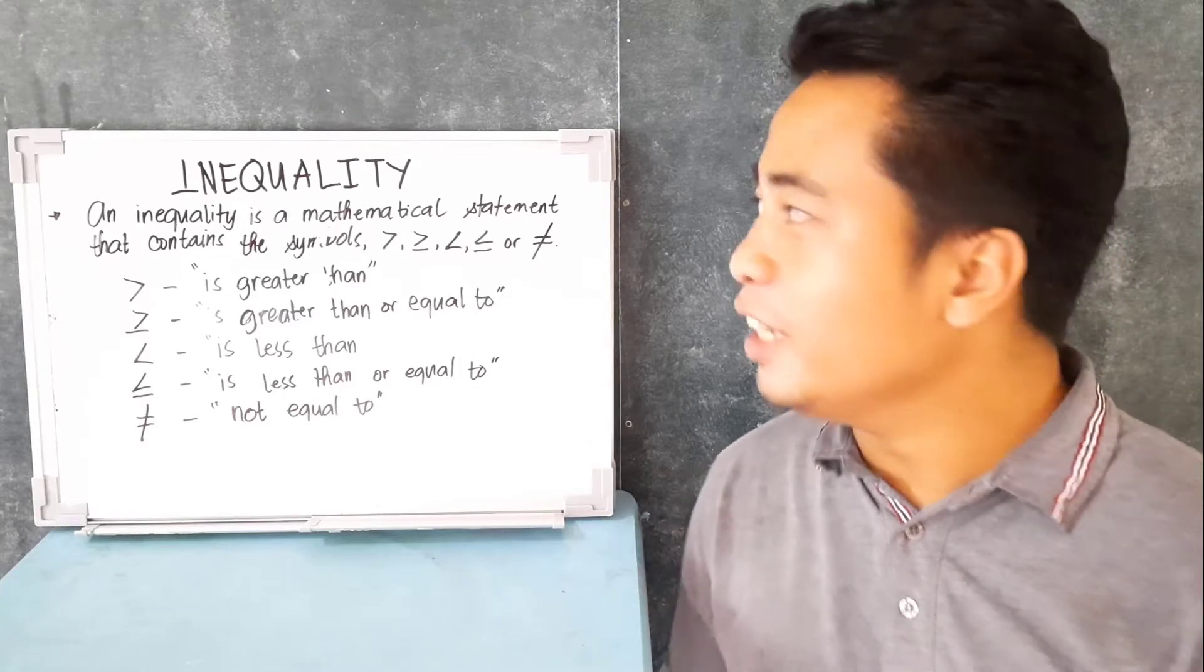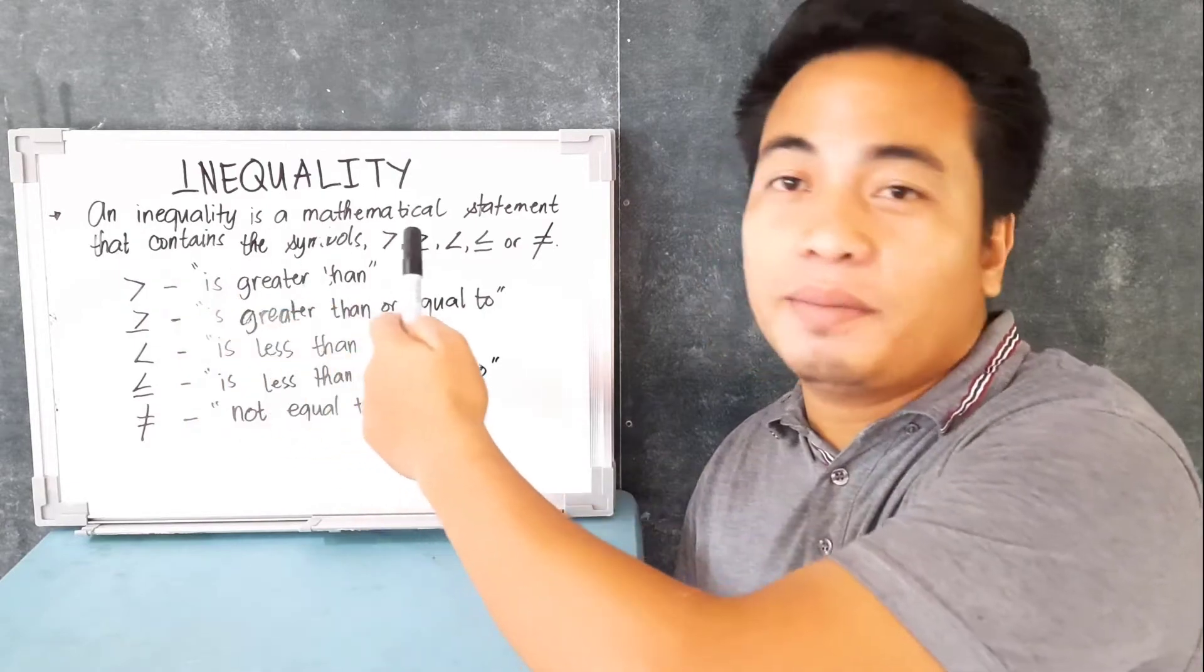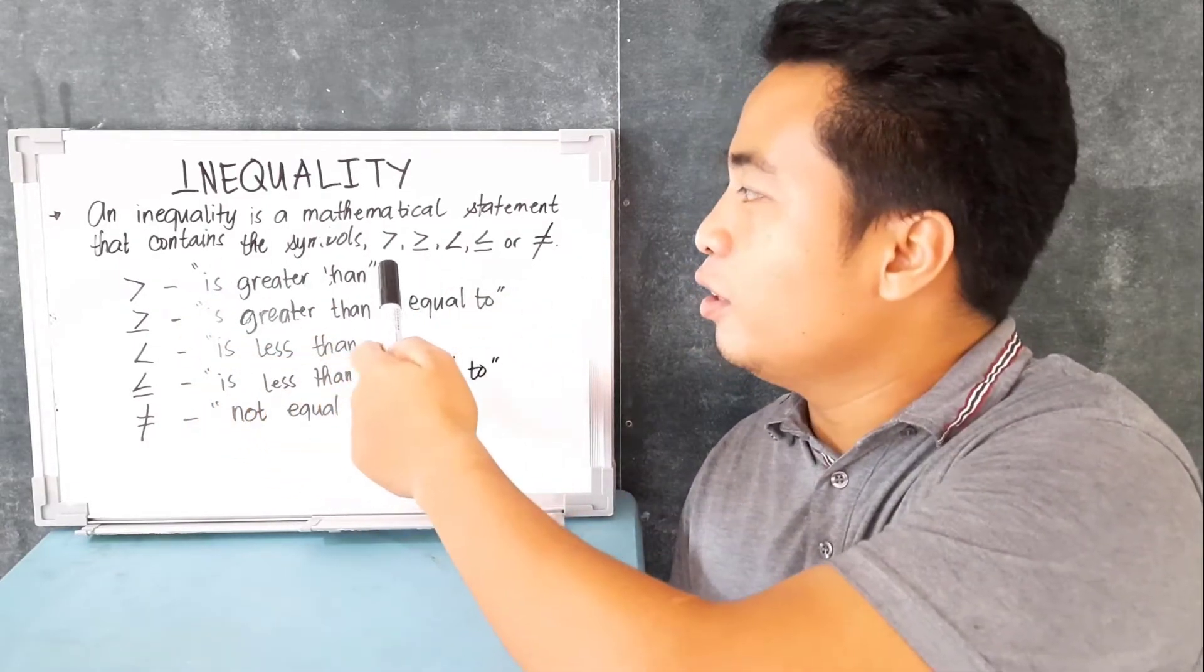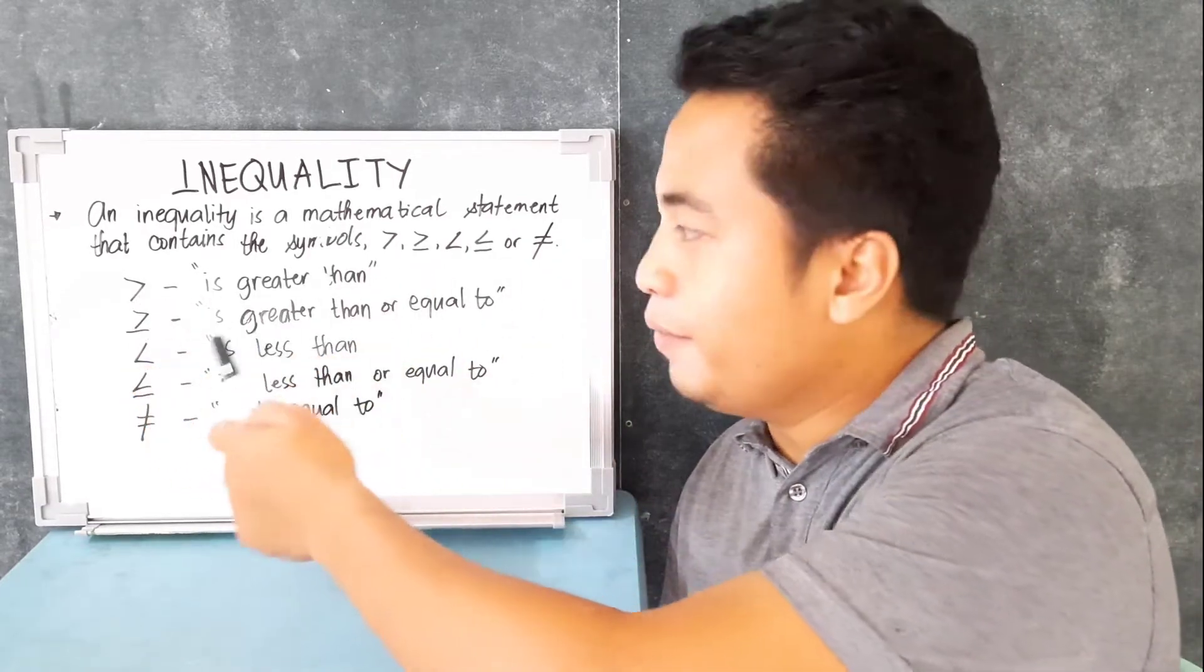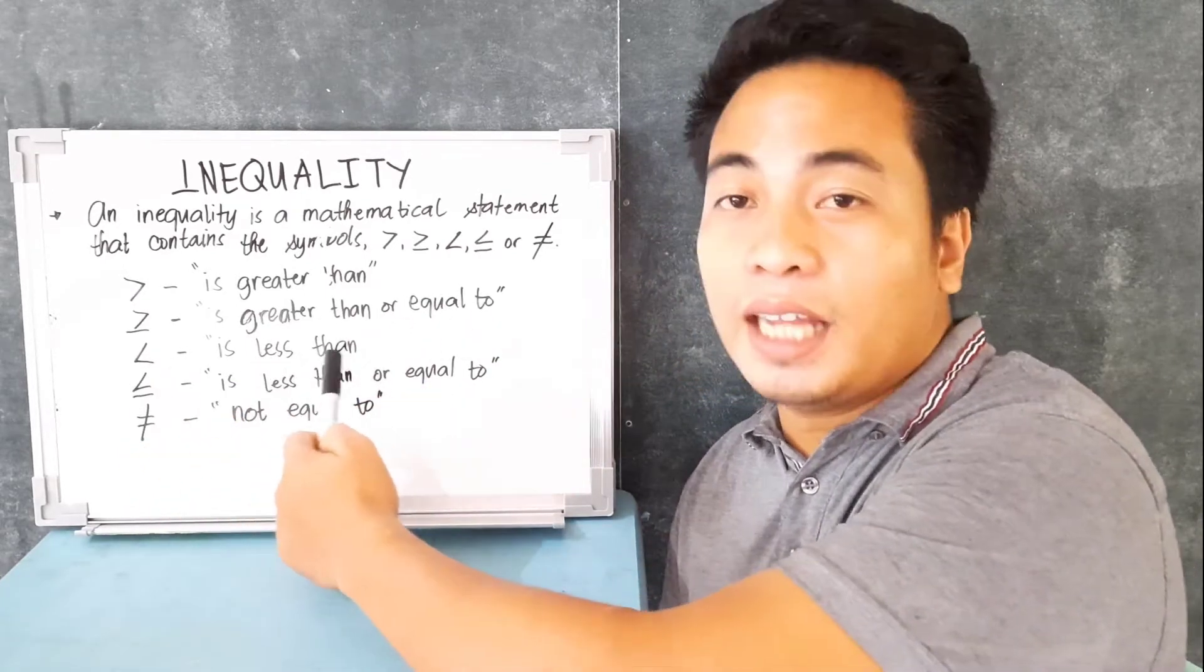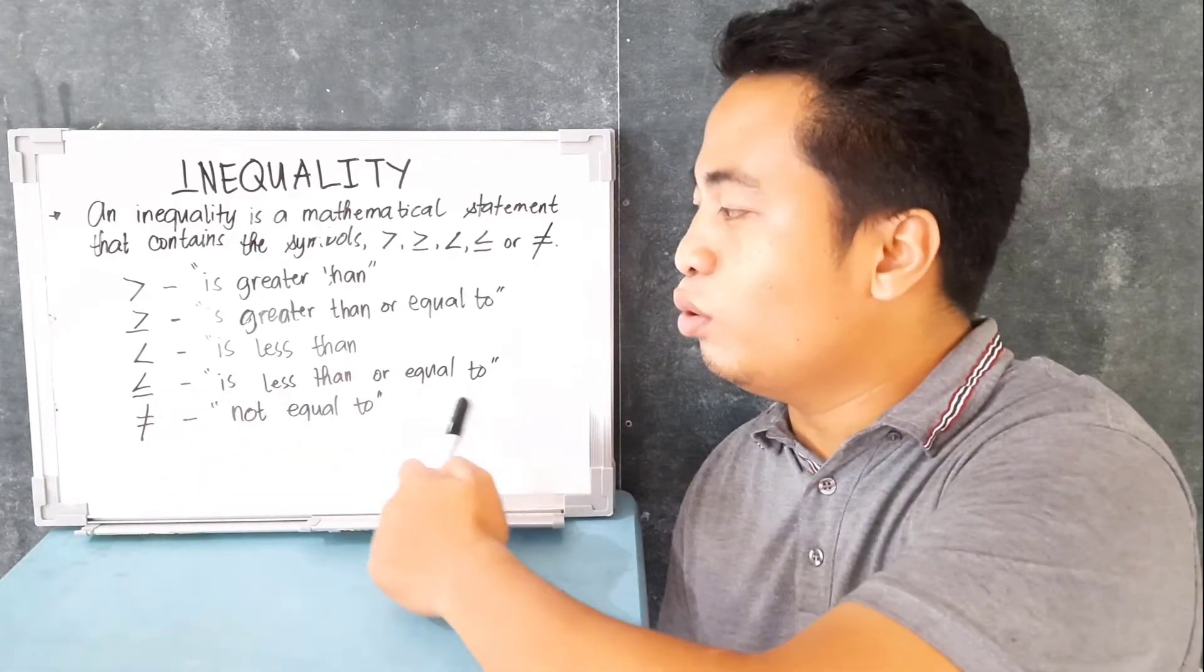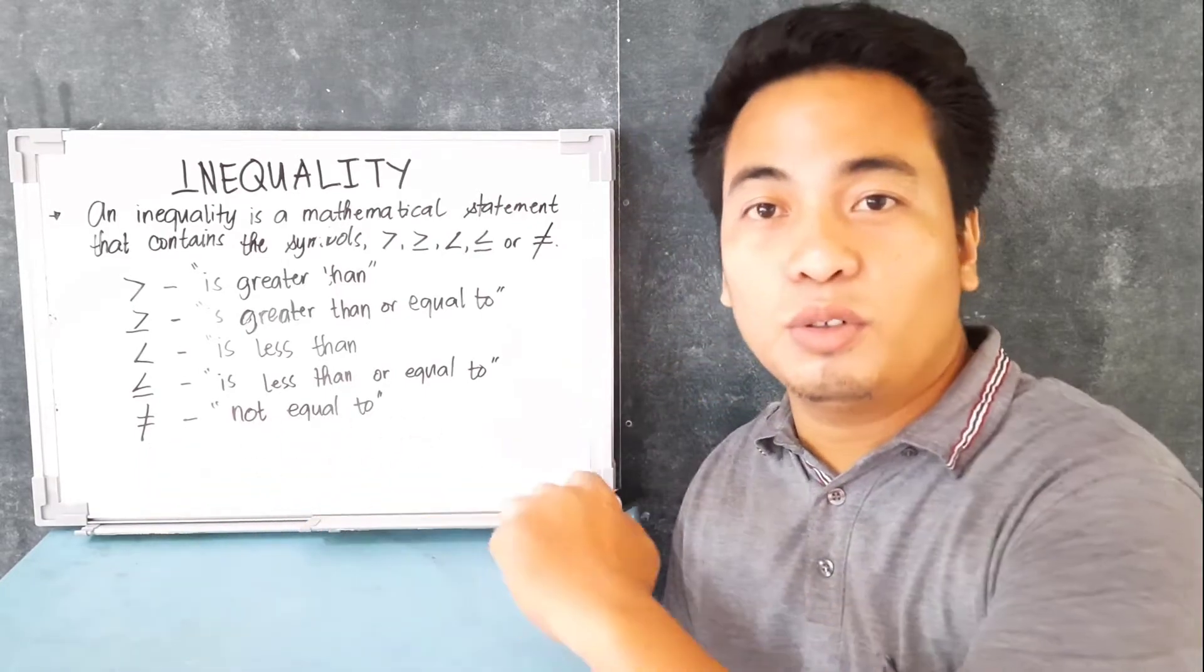So we are going to learn today inequality. An inequality is a mathematical statement that contains symbols like this. This one is greater than, this one is greater than or equal to, and this symbol is less than, and this other symbol here is less than or equal to. And if you can see a symbol like this, it means it is not equal to.